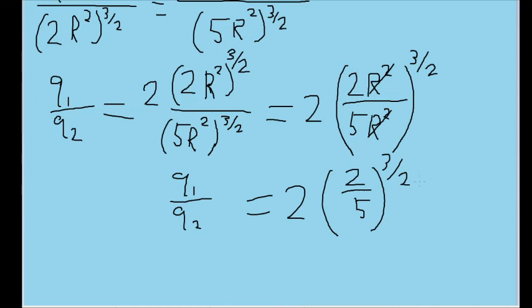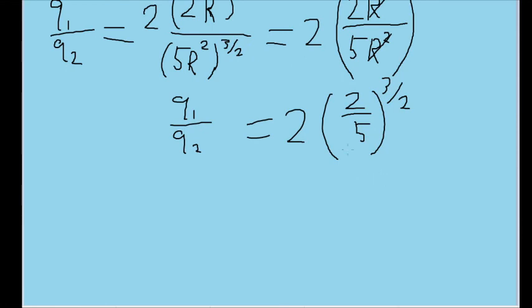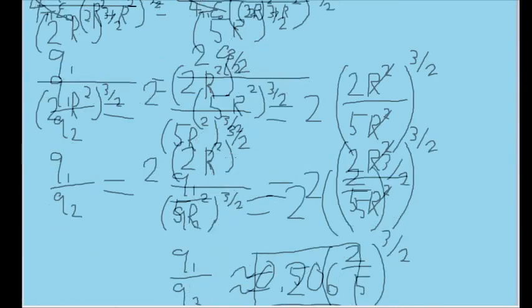And now all of a sudden all our variables are gone. We just have some constant numbers now. So we can pretty easily just plug this into our calculators and find an answer of about 0.506. And that is roughly what the ratio is of the charge on ring 1 to the charge on ring 2.